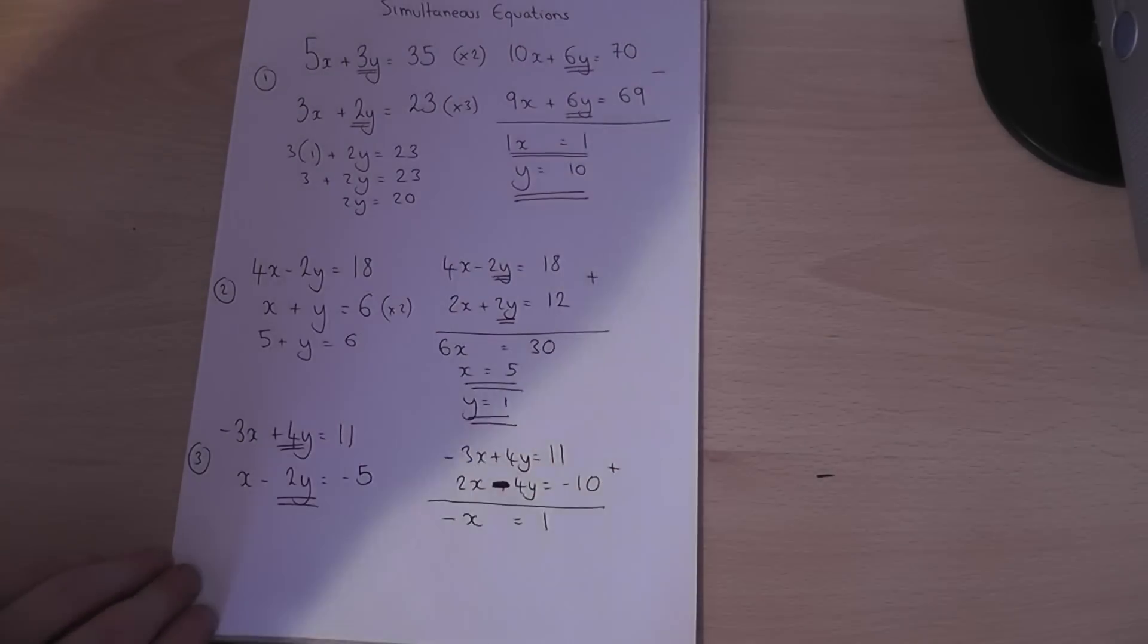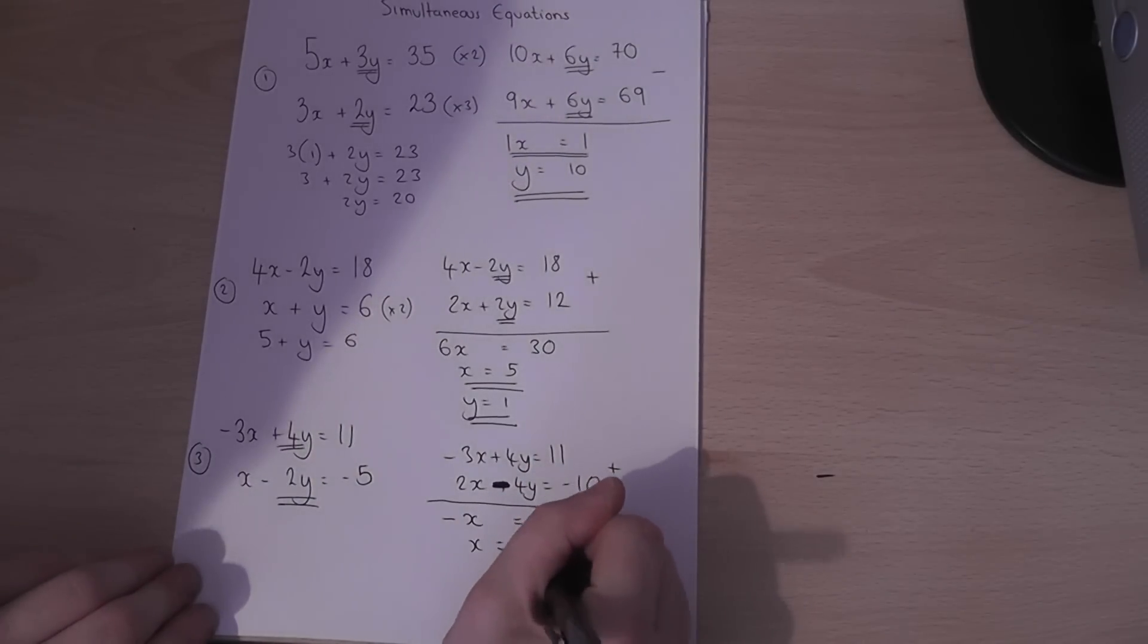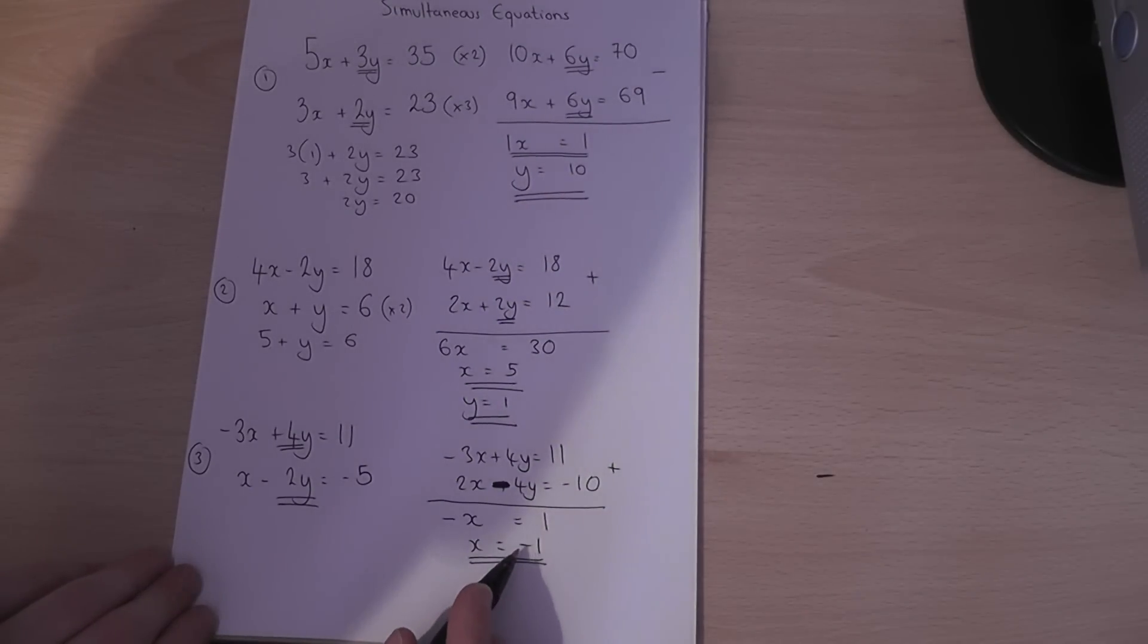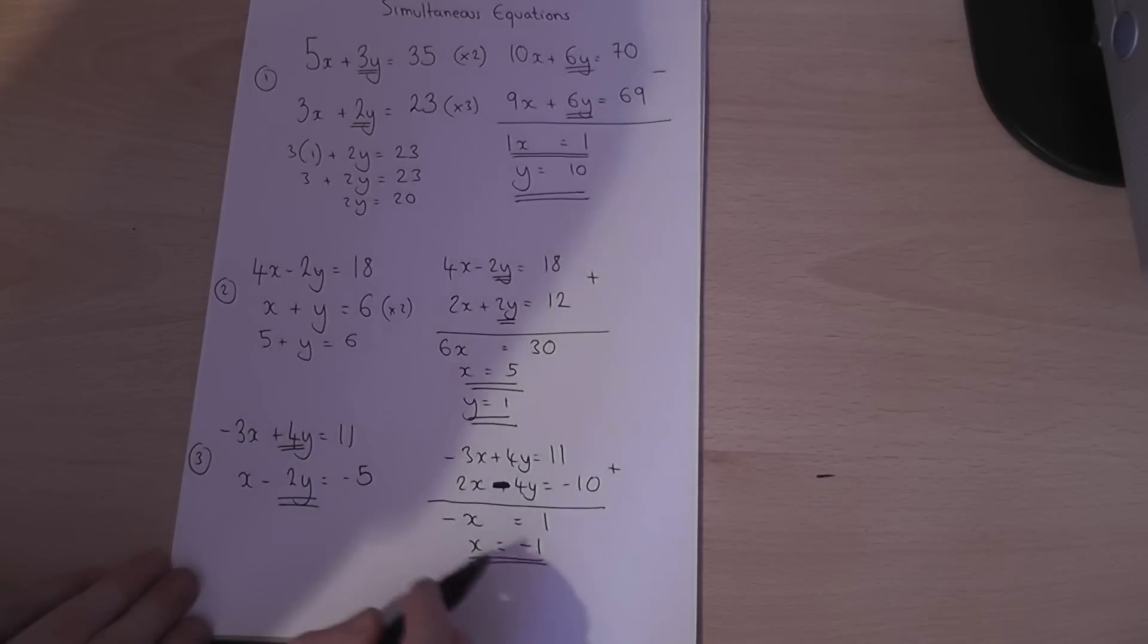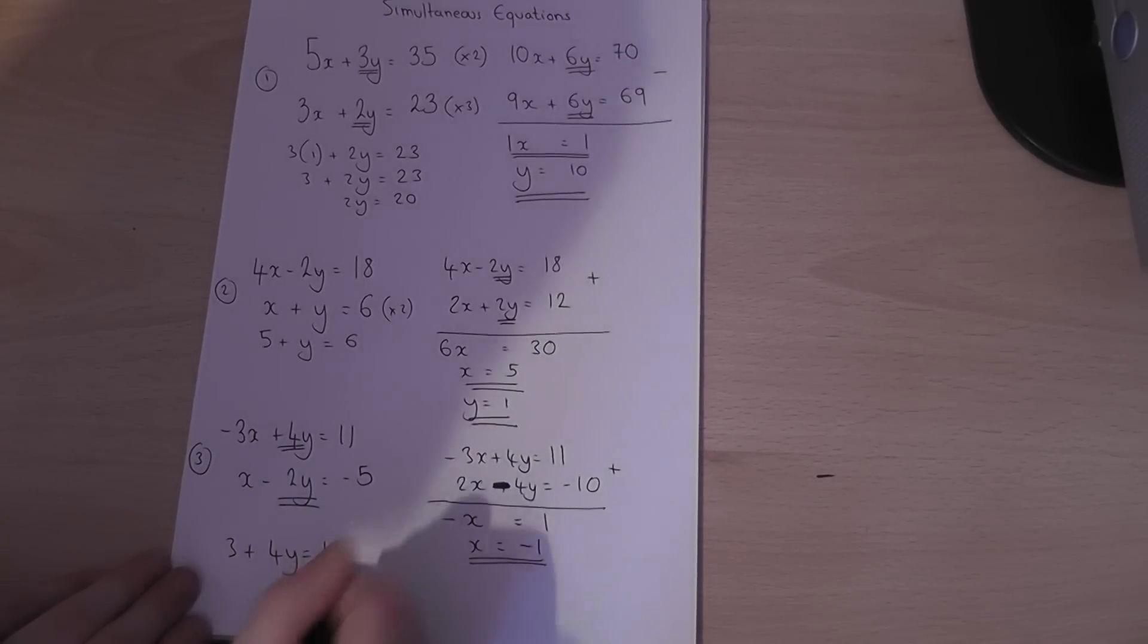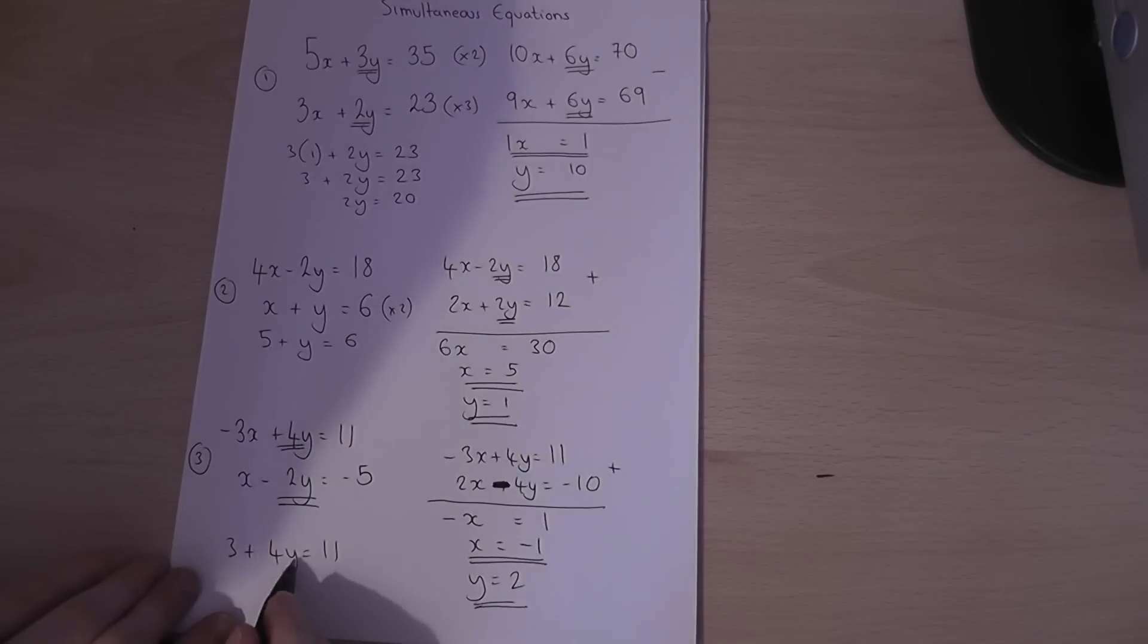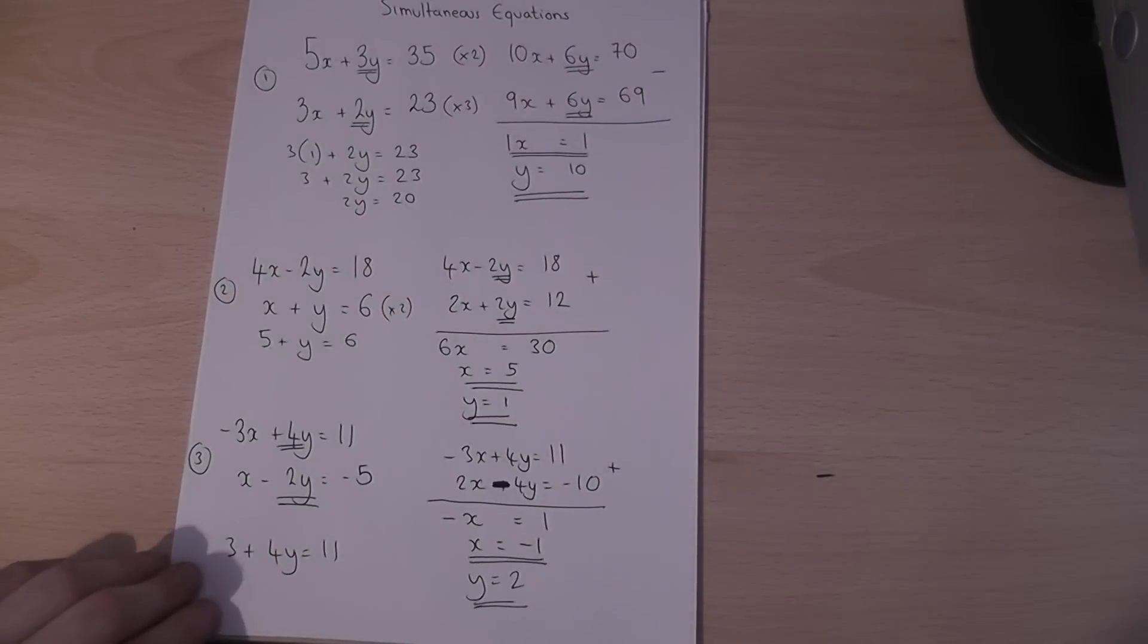So minus x is 1, therefore x must equal minus 1. So that is one of the solutions to these pairs of simultaneous equations. But if x equals minus 1, if I pick the first equation, x is minus 1, minus 3 times minus 1 goes to plus 3. So 3 plus 4y equals 11. This must equal 8. 3 plus 8 equals 11. So y must equal 2, because 4 times 2 is 8 plus 3 is 11. And these are the two solutions to this pair of simultaneous equations.